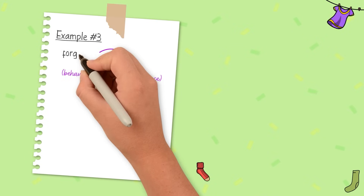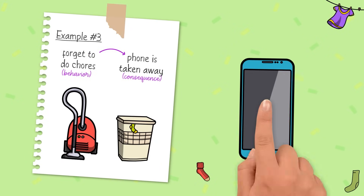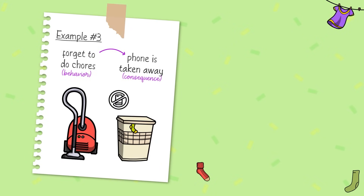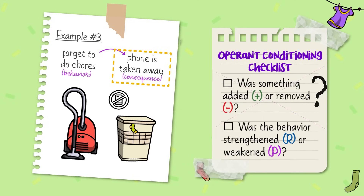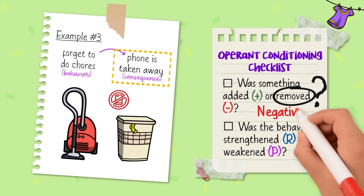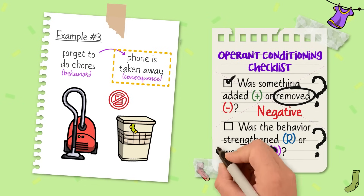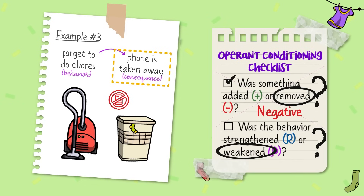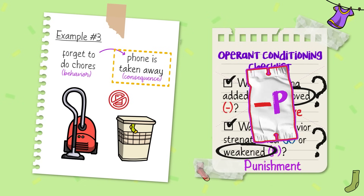Next, you forget to do your chores, so your parents take away your phone for the night. Focusing in on the consequence, was something added or removed? The phone was taken away, so it's negative. And does this strengthen or weaken the behavior? It's meant to weaken skipping chores, so it's a punishment. This is negative punishment.